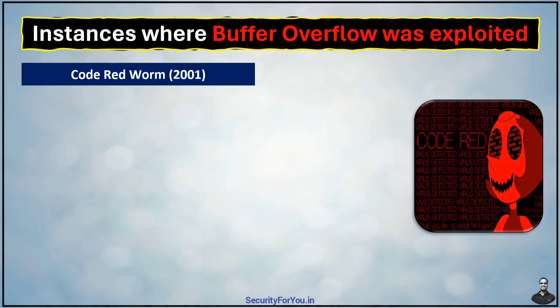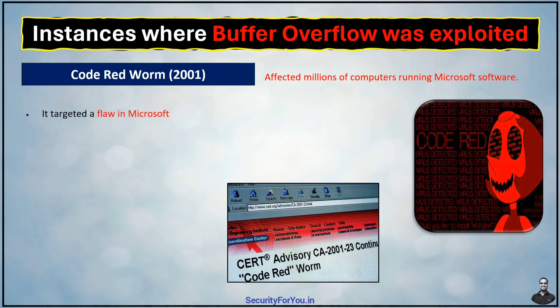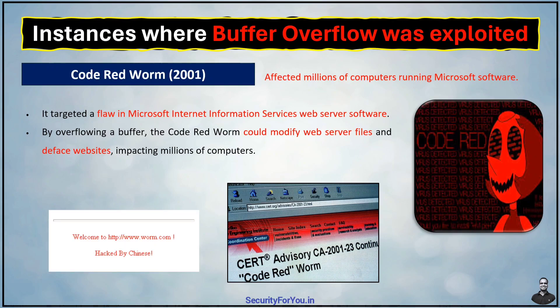In 2001, the Code Red worm affected millions of computers running Microsoft software. This worm exploited a buffer overflow vulnerability, targeting a flaw in Microsoft Internet Information Services web server software. By overflowing a buffer, the Code Red worm could modify web server files and deface websites, impacting millions of computers. These worms exploited buffer overflow vulnerabilities and caused significant damage.